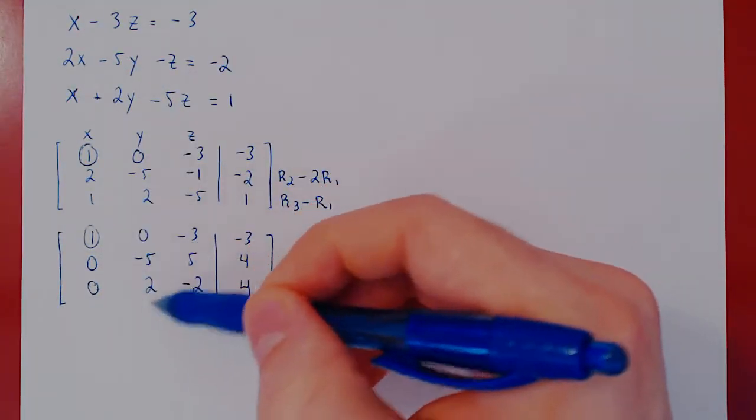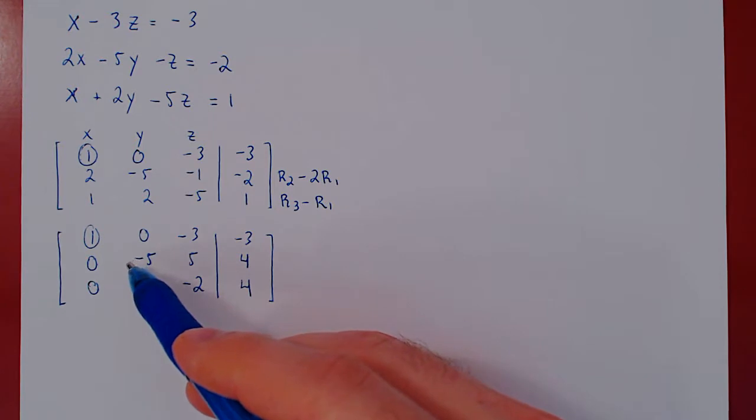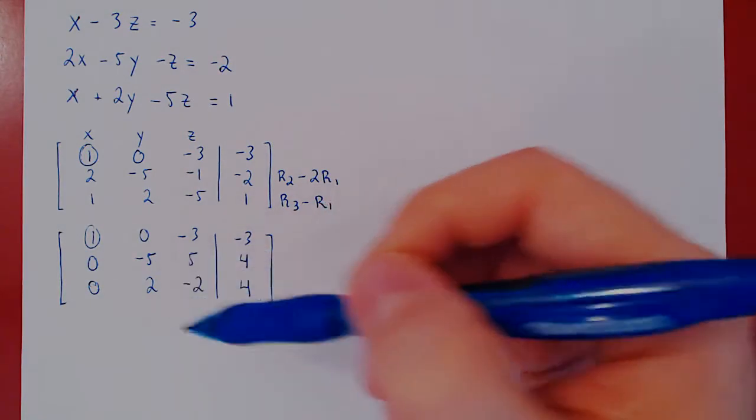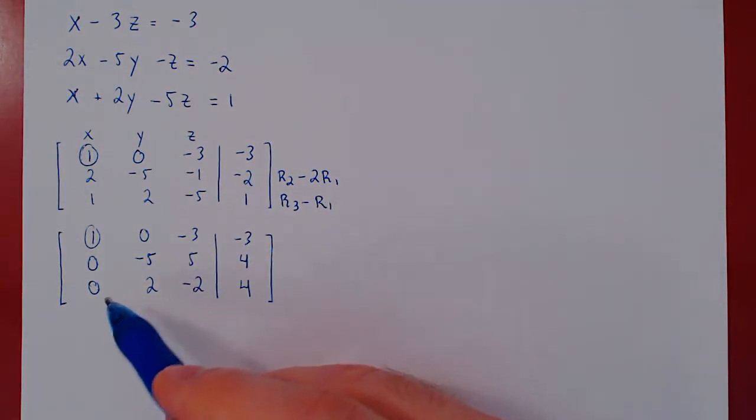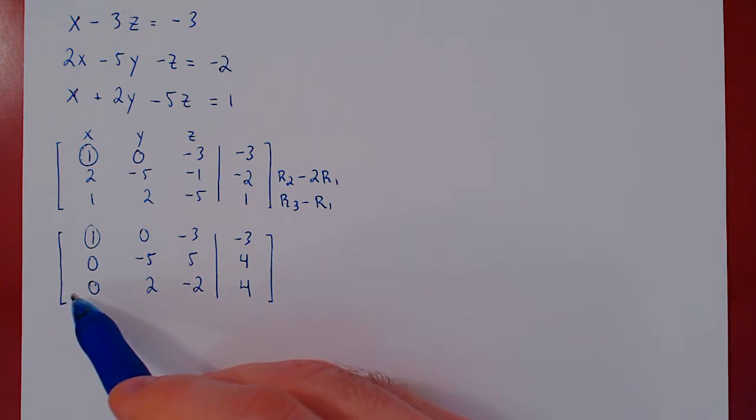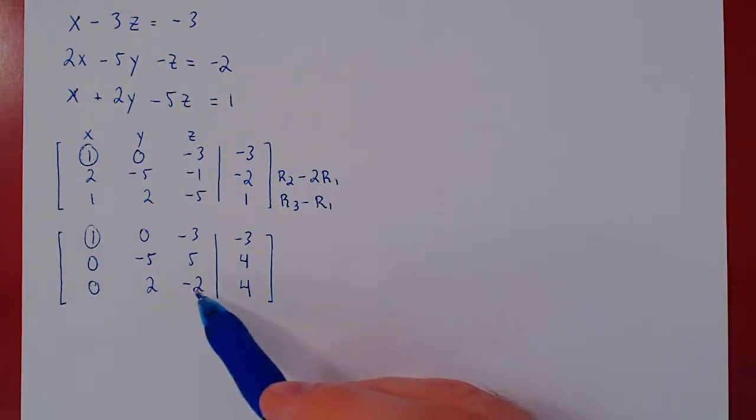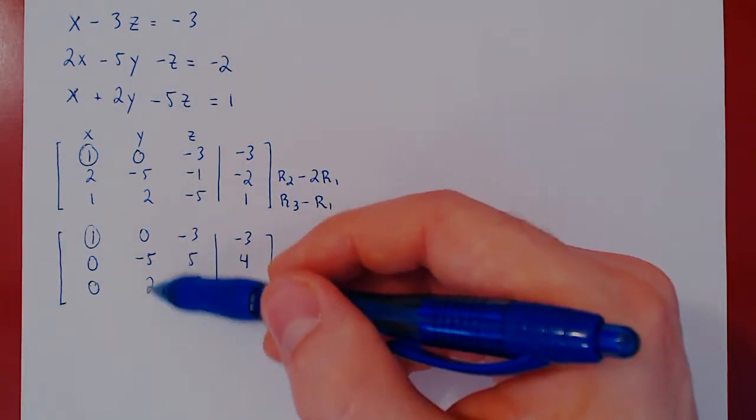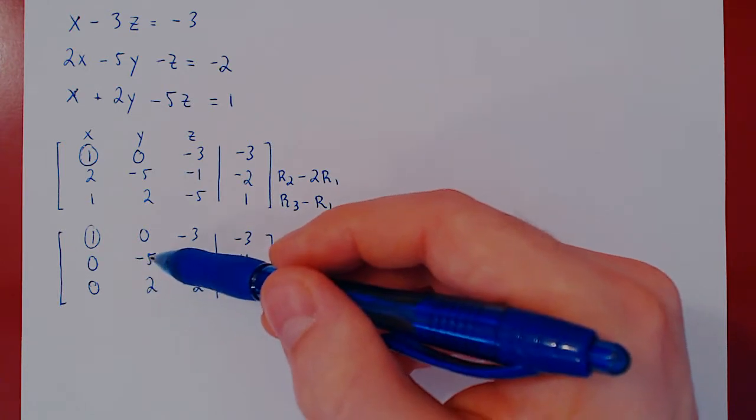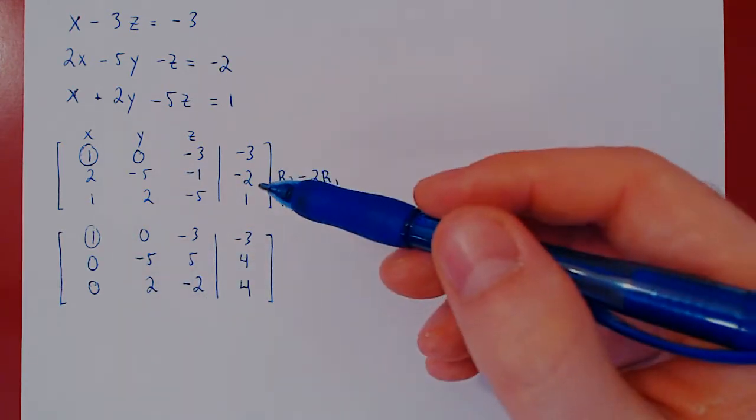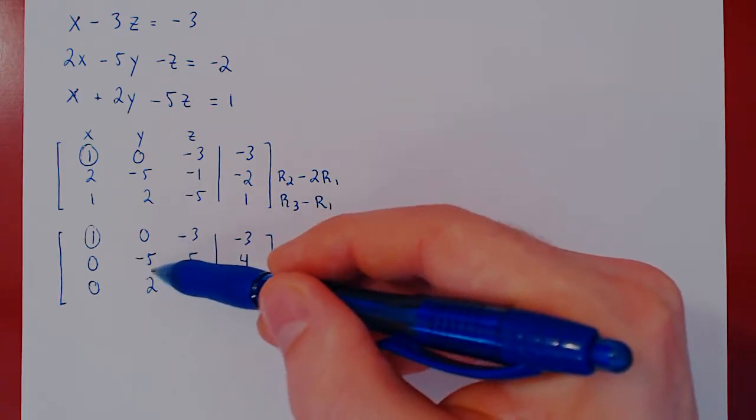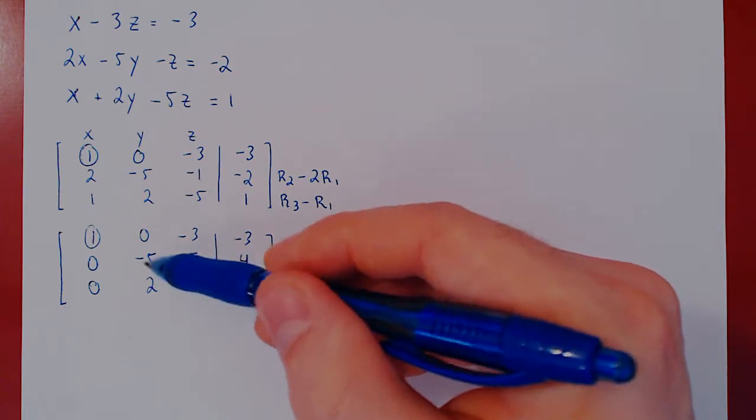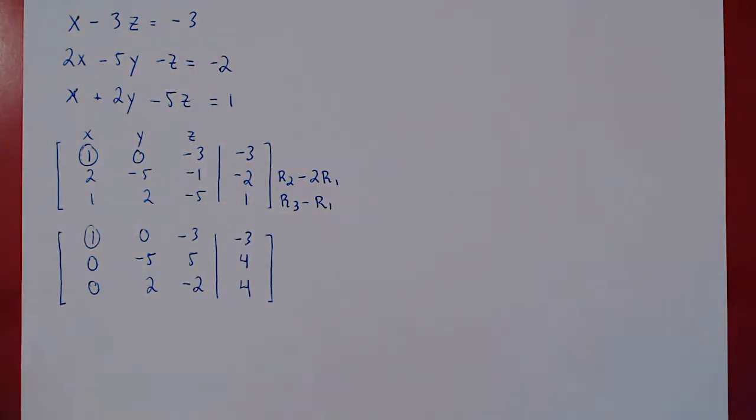Well, how do we get our leading one? We could multiply row 2 by negative 1 over 5, but that would give us a fraction here. We could multiply row 3 by 1 half. Since every term here is divisible by 2, there would be no fractions. And then we could swap row 2 and row 3 to place the leading one in the top row. Or we could be sneaky and do row 2 plus 3 row 3. That's negative 5 plus 6 would be positive 1. Just for the hell of it, let's do this.